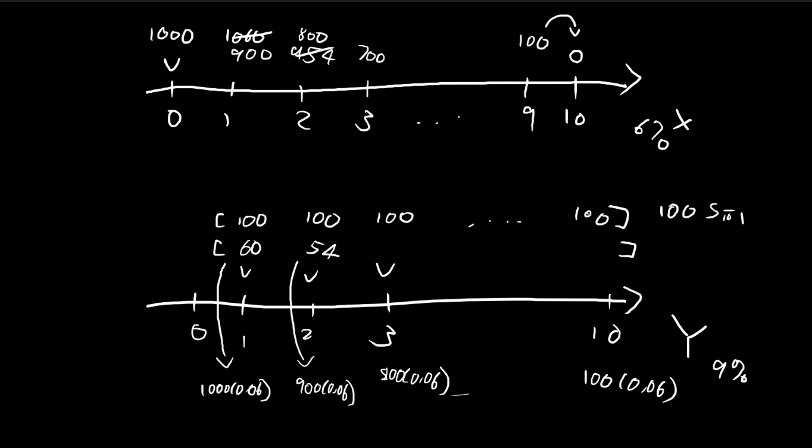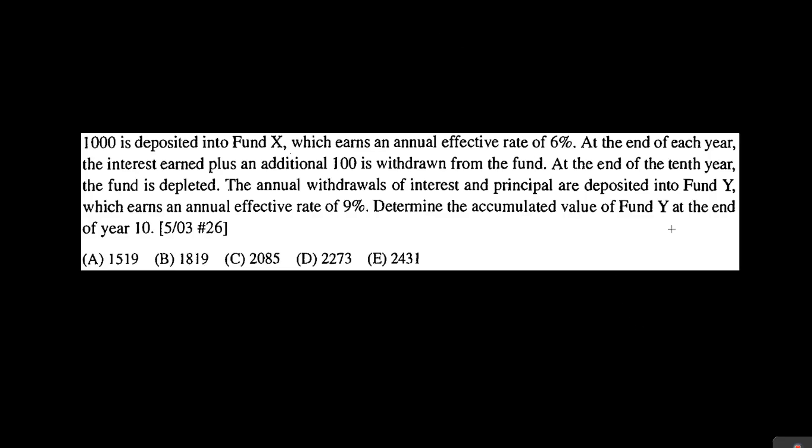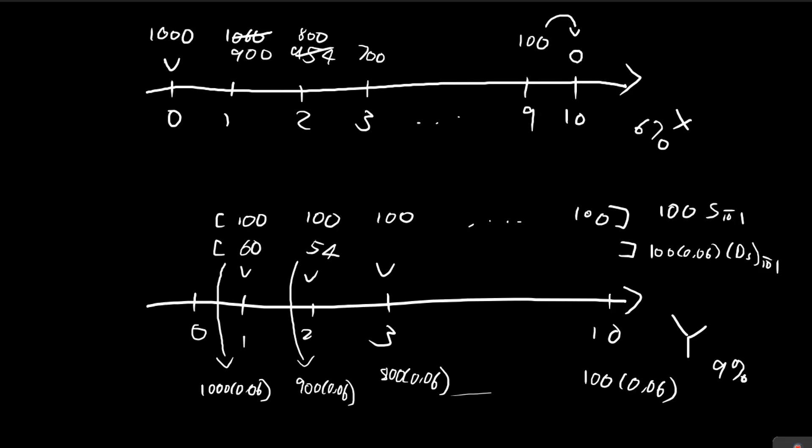So the accumulated value, due to this decreasing annuity, we have a symbol for that. So essentially, it's just 100 times 0.06 times DS10. So the accumulated value, the final accumulated value at fund Y, at the end of year 10, is just the sum of both of these. So you just have to add both of these together.